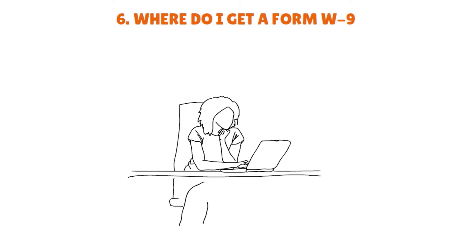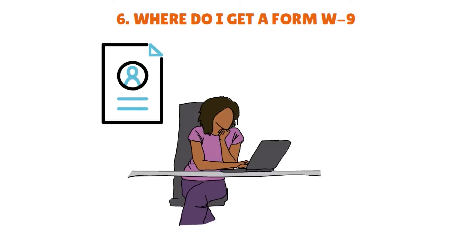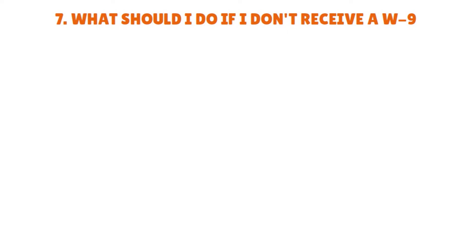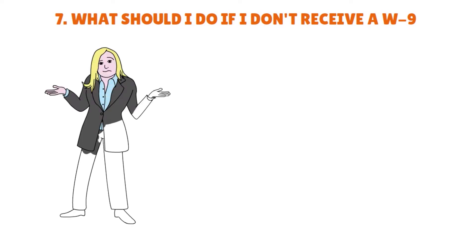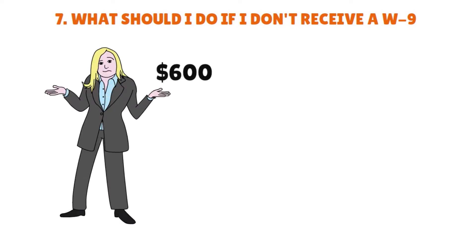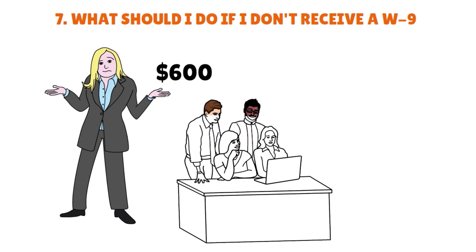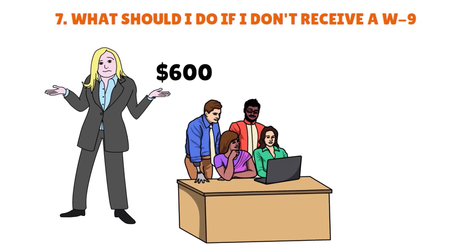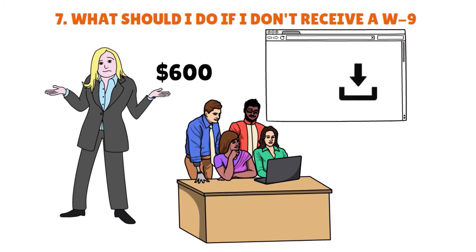In most cases, the business you are contracting with will send you a blank W-9 and ask you to complete it. You can also download it from the IRS website. If you're an independent contractor and you don't receive it from a company you've done more than $600 worth of work for, or if your company needs to issue W-9 forms to independent contractors, go to the IRS website to download the form.